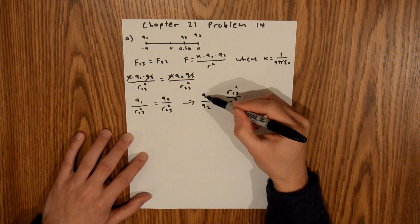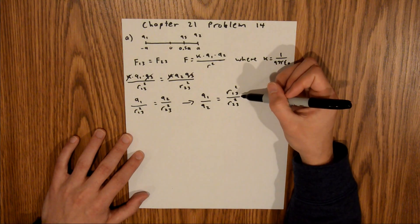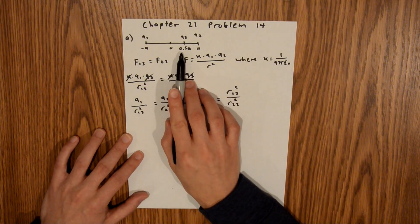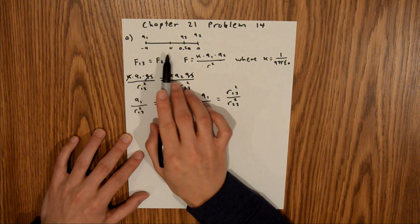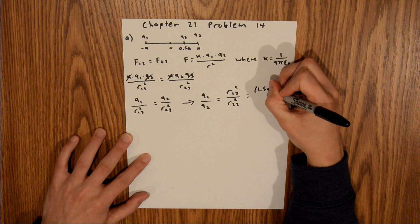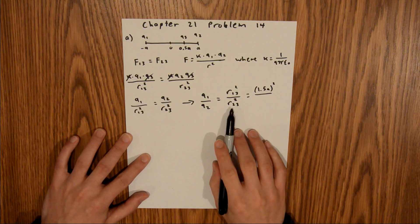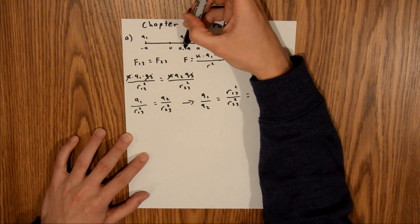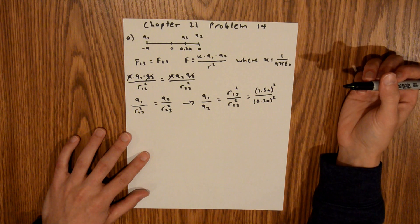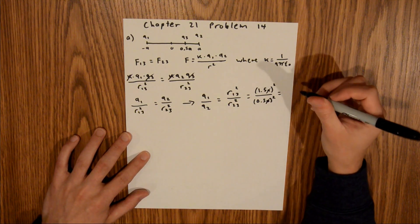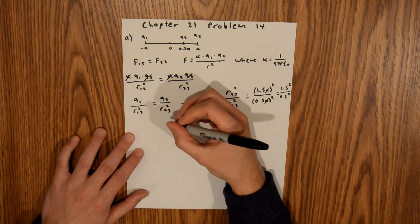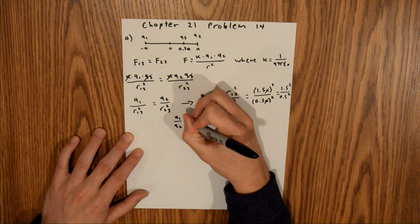We need to find the two radii. r13, the distance from charge 1 to charge 3, is 0.5a minus negative a, which equals 1.5a. r23, the distance from charge 2 to charge 3, is a minus 0.5a, which is 0.5a. So q1 over q2 equals 1.5a squared over 0.5a squared. The a squared terms cancel, giving 1.5 squared over 0.5 squared. Plugging that in, the ratio of q1 to q2 for part a is equal to 9.